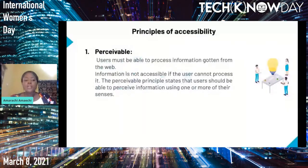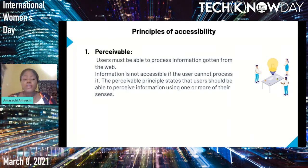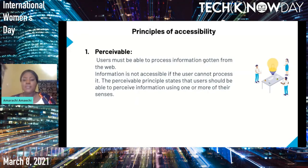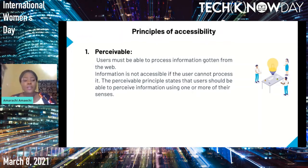The principles of accessibility: first, accessibility should be perceivable. Users must be able to process information from the web — information is not accessible if the user cannot process it. The perceivable principle states that users should be able to perceive information using one or more of their senses. For example, if I'm watching a Chinese movie on YouTube, I'm enjoying it but not understanding what's being said. If captions are provided, I can use my eyes to read the English translation.